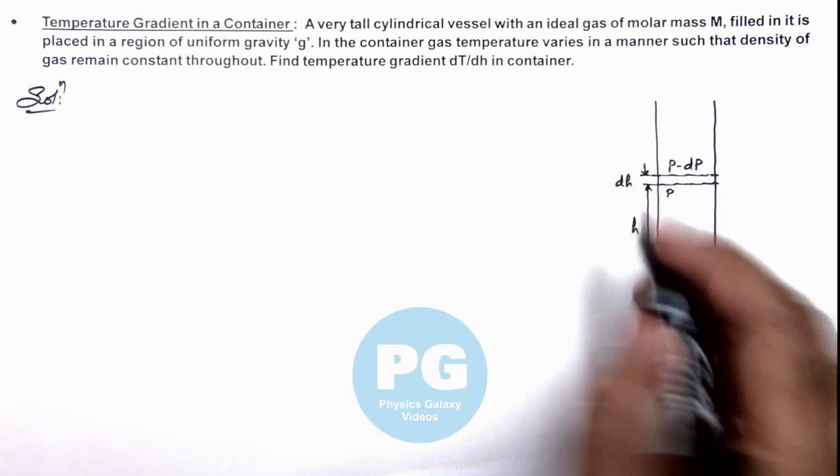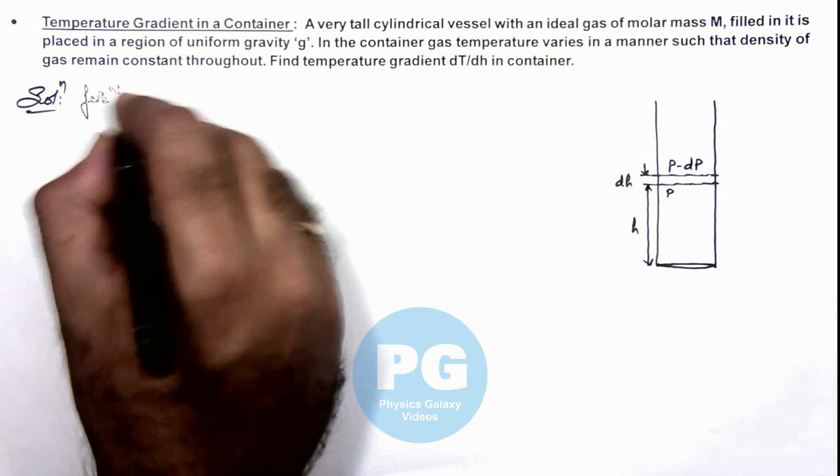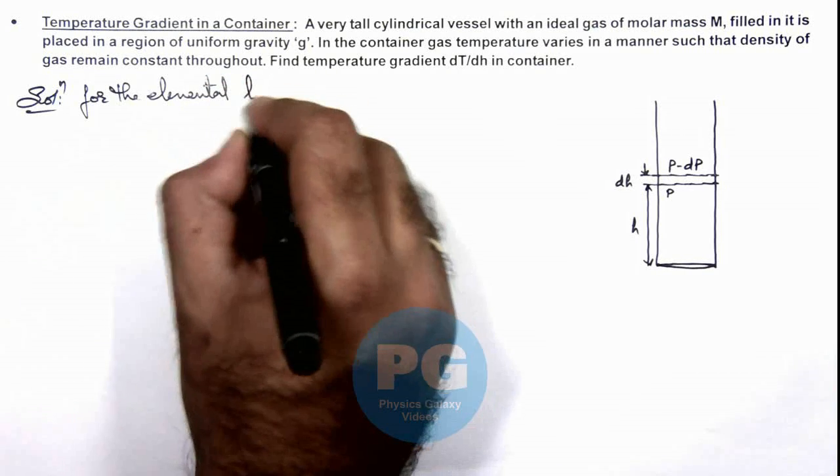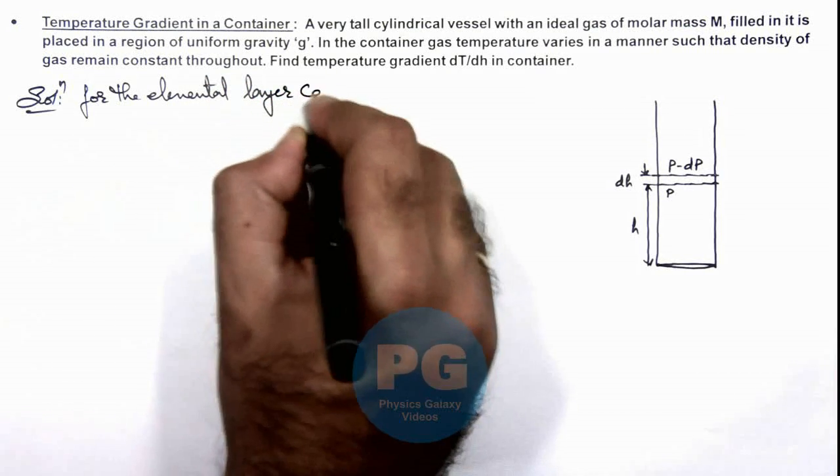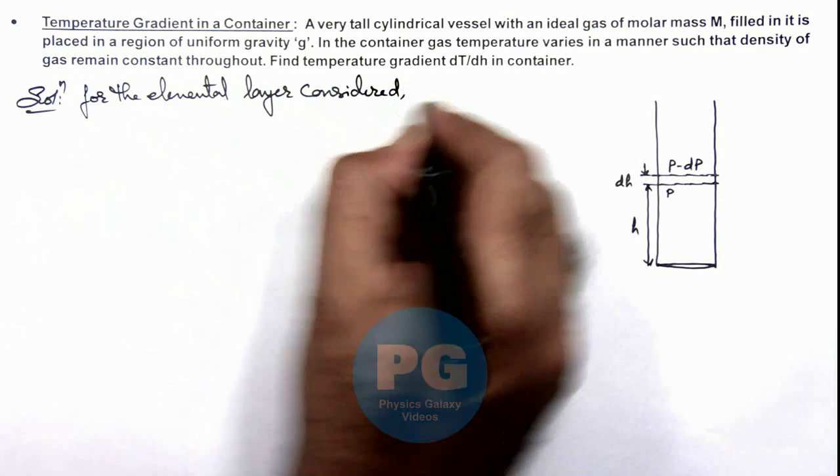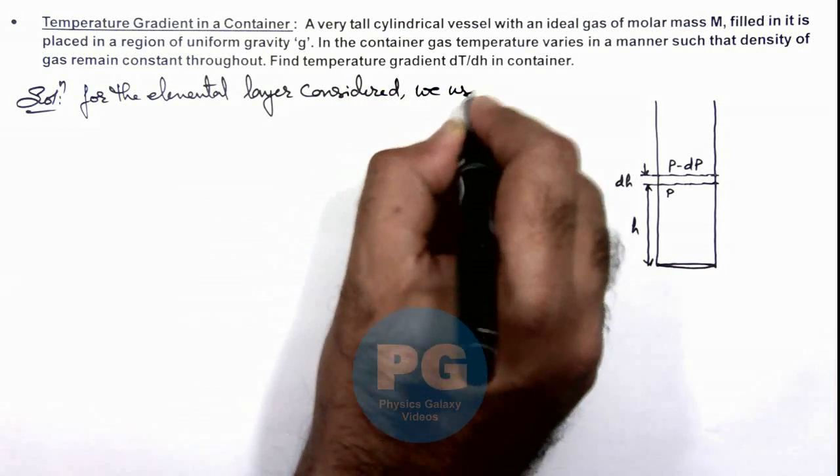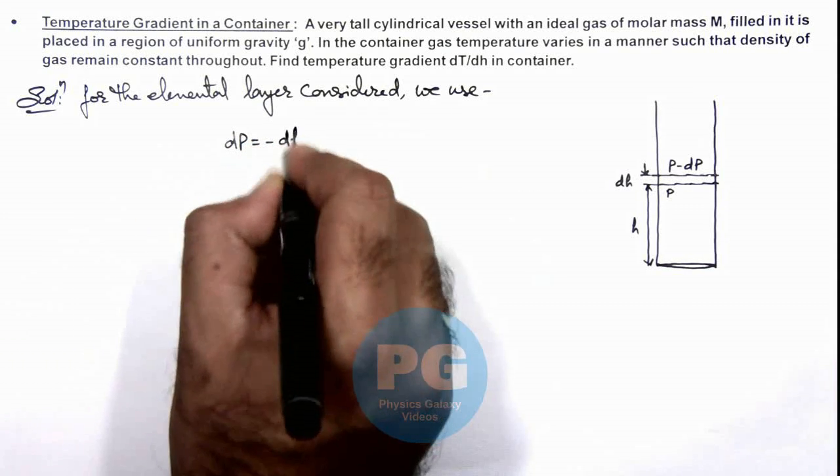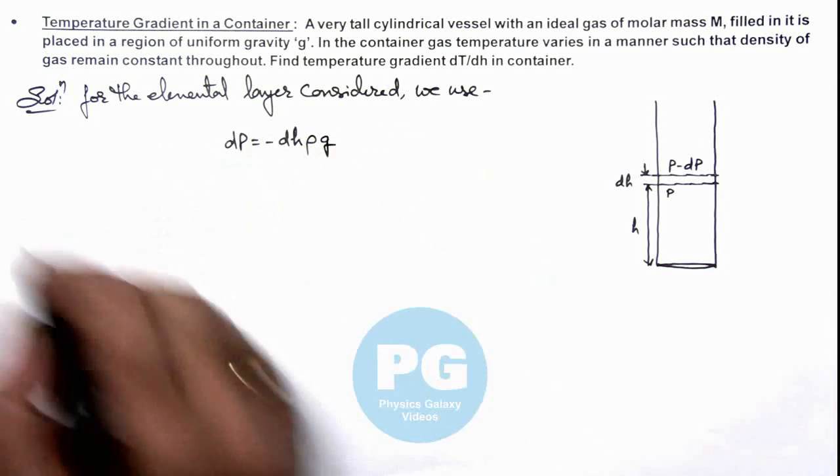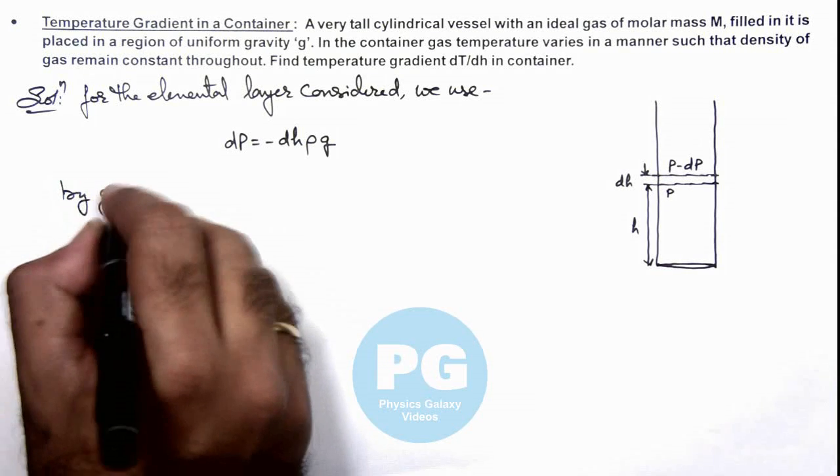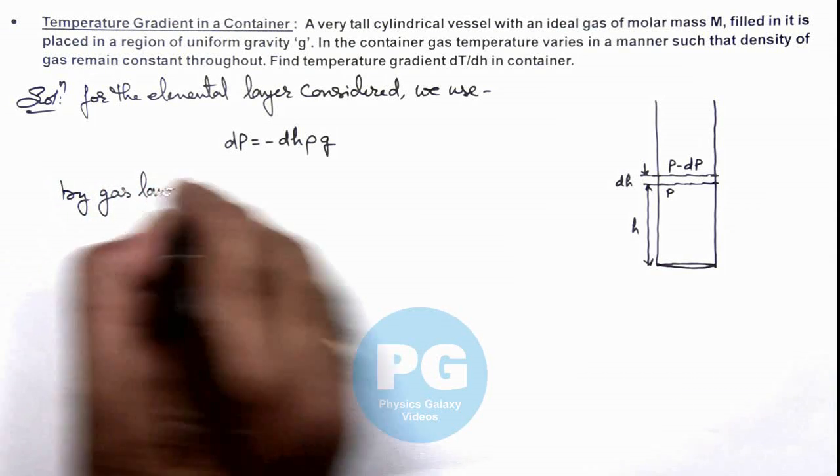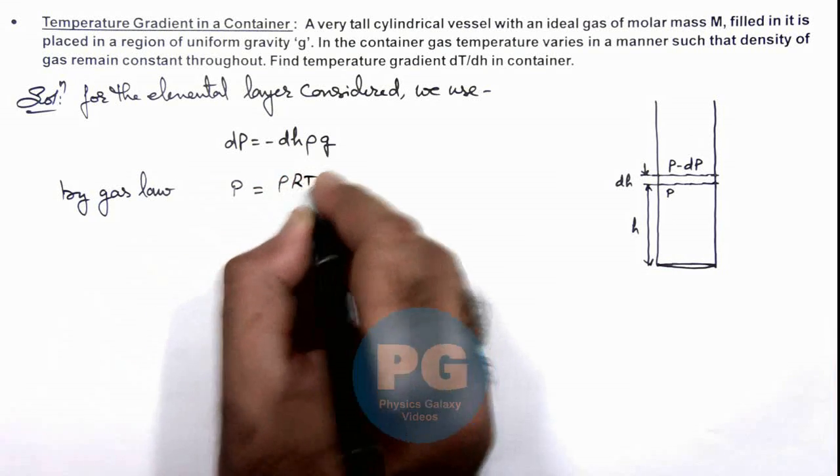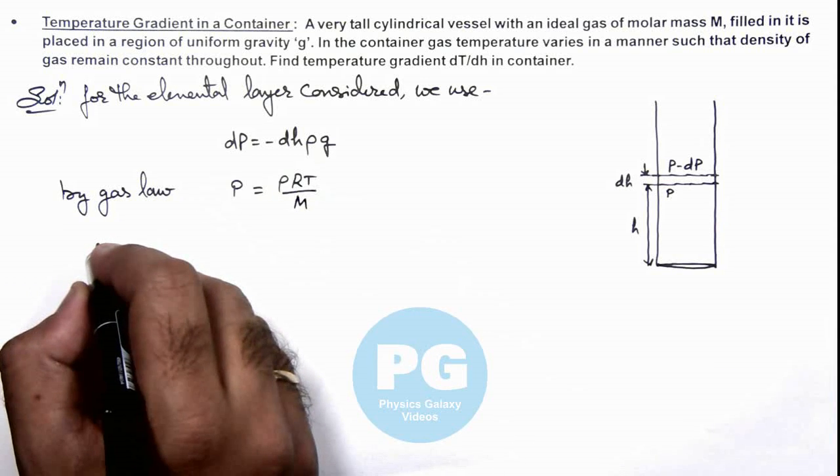So here we can write for the elemental layer considered, we use dP = -dh ρg. And we know by gas law, the value of pressure at any point is ρRT/M. So if we differentiate it, this gives dP = (ρR/M)dT.